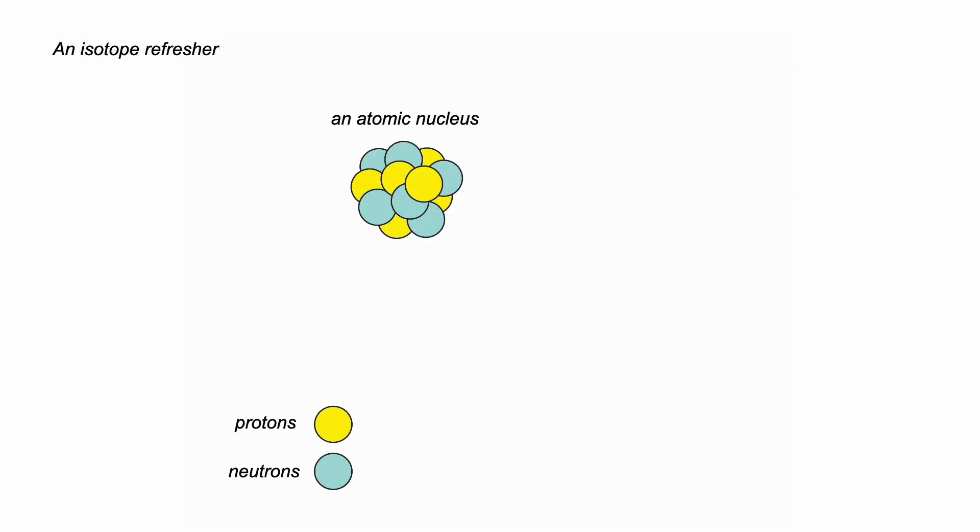Isotopes are about the nuclei of atoms. Consider oxygen, atomic number eight. The nucleus has 8 protons, but it comes with different numbers of neutrons and these define three isotopes. For oxygen, these are stable, so they're not radioactive.